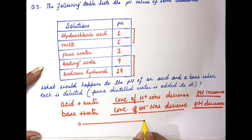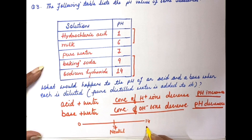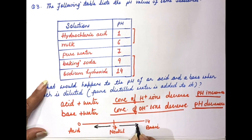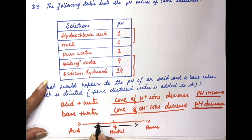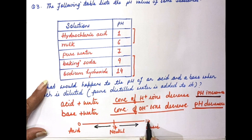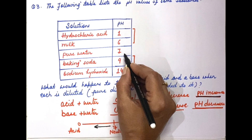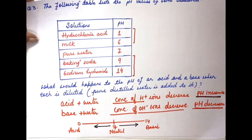इसको समझने के लिए pH scale लेते हैं — pH scale is from 0 to 14, यहाँ पे 7 है neutral, this side is highly basic and this side is highly acidic. तो acidic nature कम होने से pH value 0 से बढ़ती जाएगी — pH will increase. और base में water डालने से, OH⁻ ion concentration कम होगी, substance कम basic होगा, तो pH की value decrease होती जाएगी.